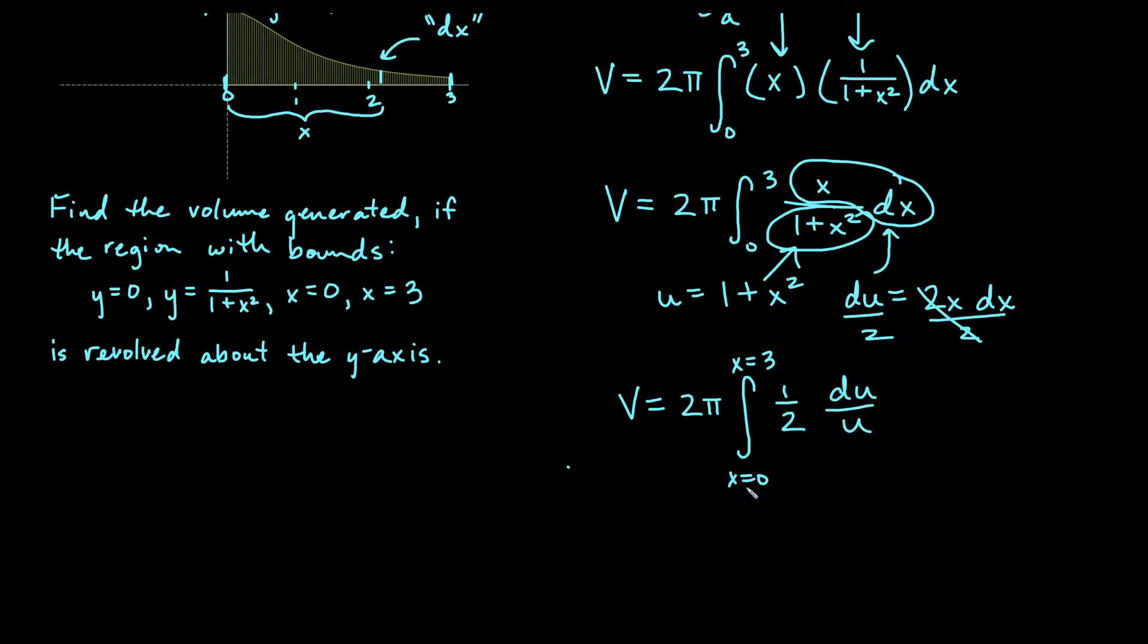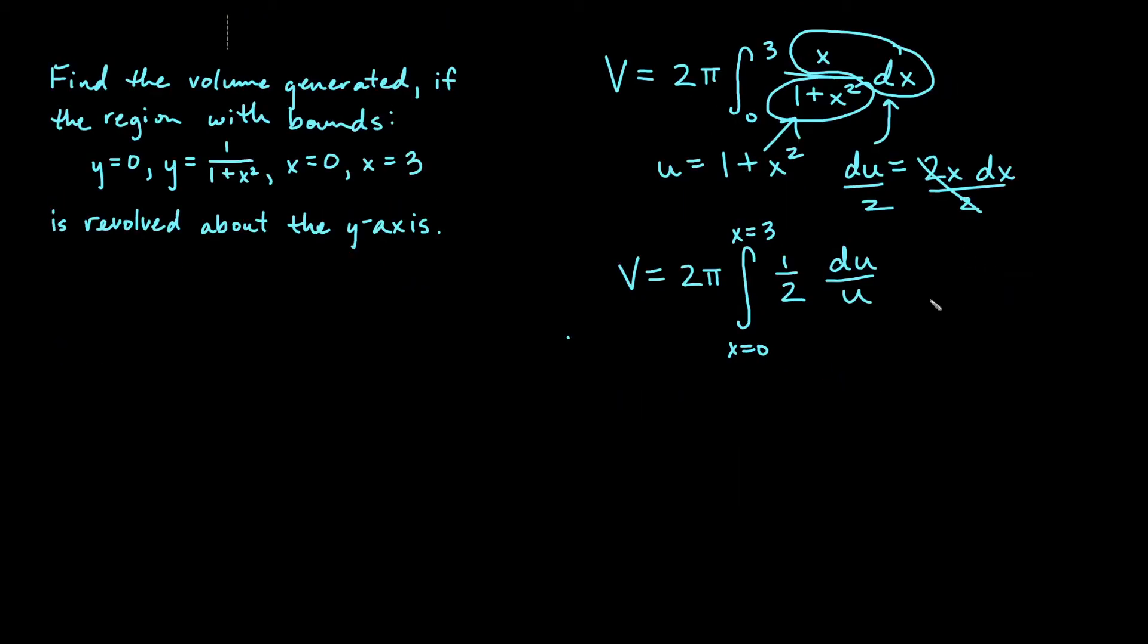The reason I've written x equals 0 and x equals 3 is these bounds were originally x bounds. So if I make a u-substitution, remember that you either need to solve for u bounds or leave your bounds in terms of x and don't plug them in until you get back to a variable of x. I like doing less work, so I'm not going to solve for new u bounds.